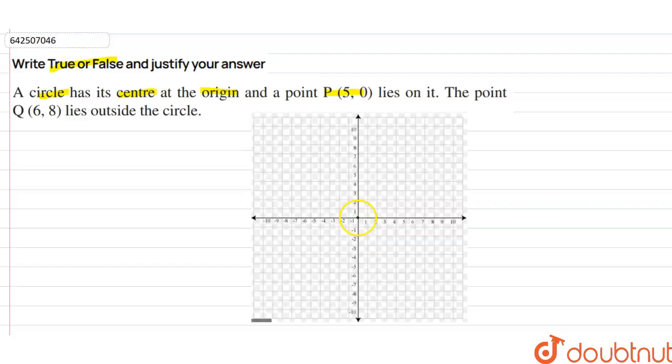So firstly, it is saying that there is a circle whose center is at the origin. Origin means (0,0). This is the center of the circle and the point (5,0) lies on it.